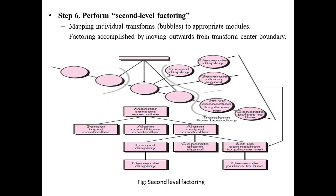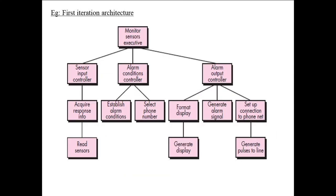See the example. It says perform second-level factoring. Here, mapping individual transforms - that is, bubbles to appropriate modules. Factoring is accompanied by moving outward from the transform center boundary. Whatever we are doing here is transforming the DFD to actual design. We are doing it level by level. From the DFD, we have drawn the architecture. This is your first iteration architecture. And then, we need to improve this and modify this.